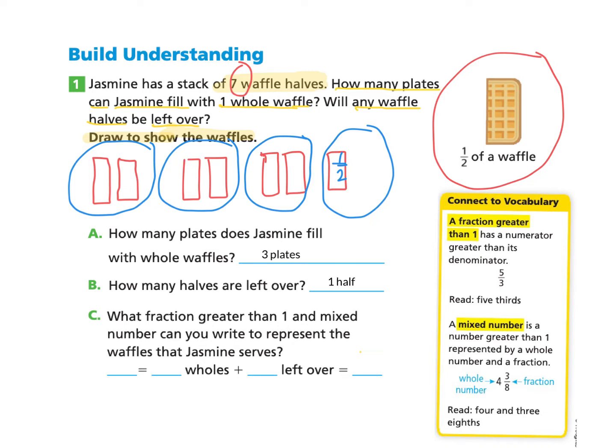Next we can look at part C. What fraction greater than one and a mixed number can you write to represent the waffles that Jasmine serves. We need to take a look at the connect to vocabulary. We notice that the definition of a fraction greater than one has a numerator or top number greater than its denominator. And they give an example here where five thirds, five is greater than the number three. We also find that the definition for a mixed number is greater than one represented by a whole number and a fraction. And the example they give is the whole number four and the fraction three eighths.